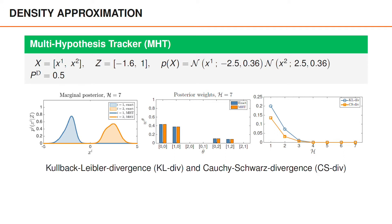A general conclusion from this illustration is that the more hypotheses we have in MHT, the better the density approximation. In real scenarios we cannot compute all data associations and therefore cannot verify that pruned hypotheses have weights near zero. However, the general conclusion still holds: more MHT hypotheses means a better density approximation. And generally, the better the density approximation, the better our chances of extracting object estimates that are close to the ground truth.